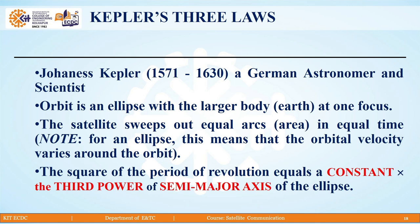The square of the period of revolution equals a constant multiplied by the third power of the semi-major axis of the ellipse. This is the third Kepler's law.